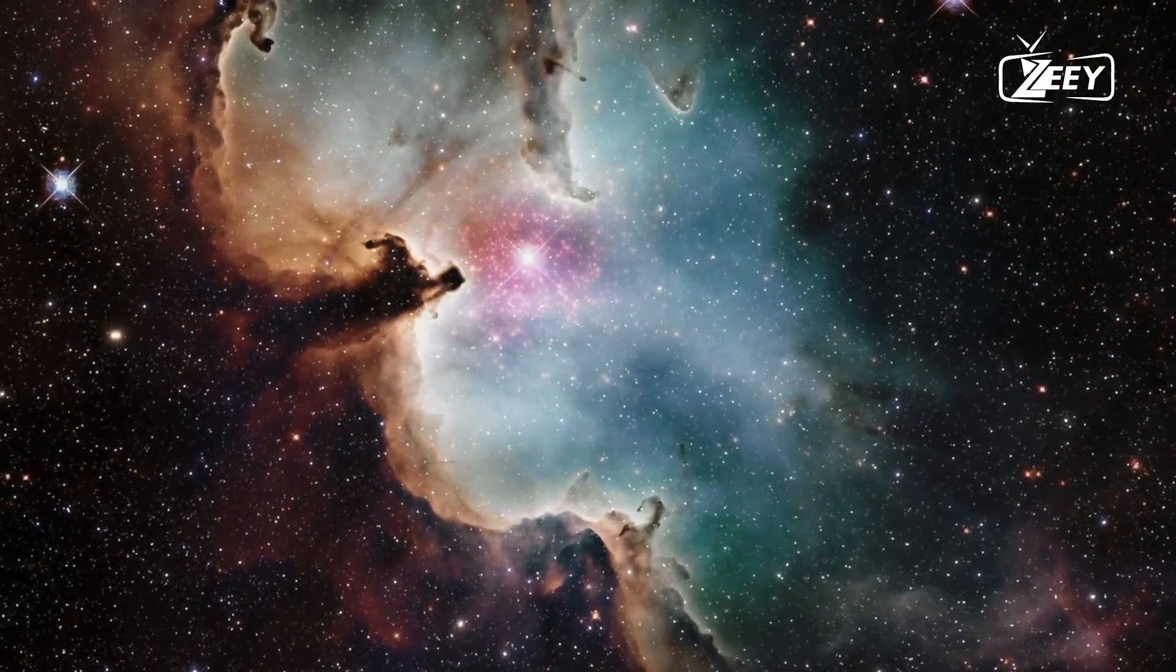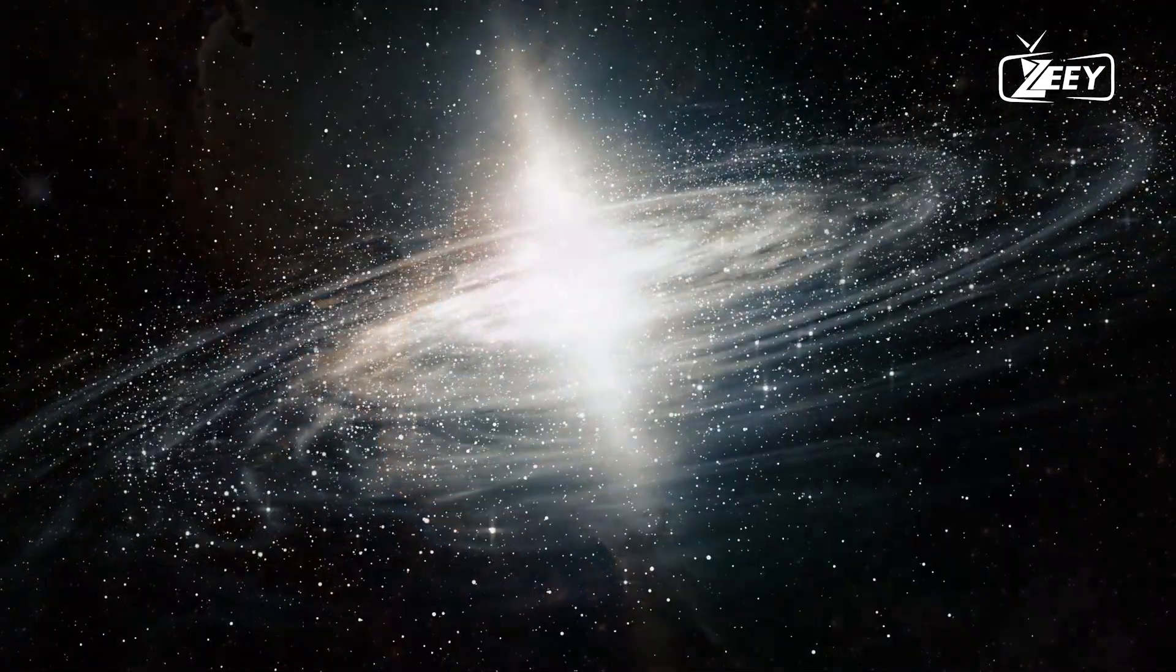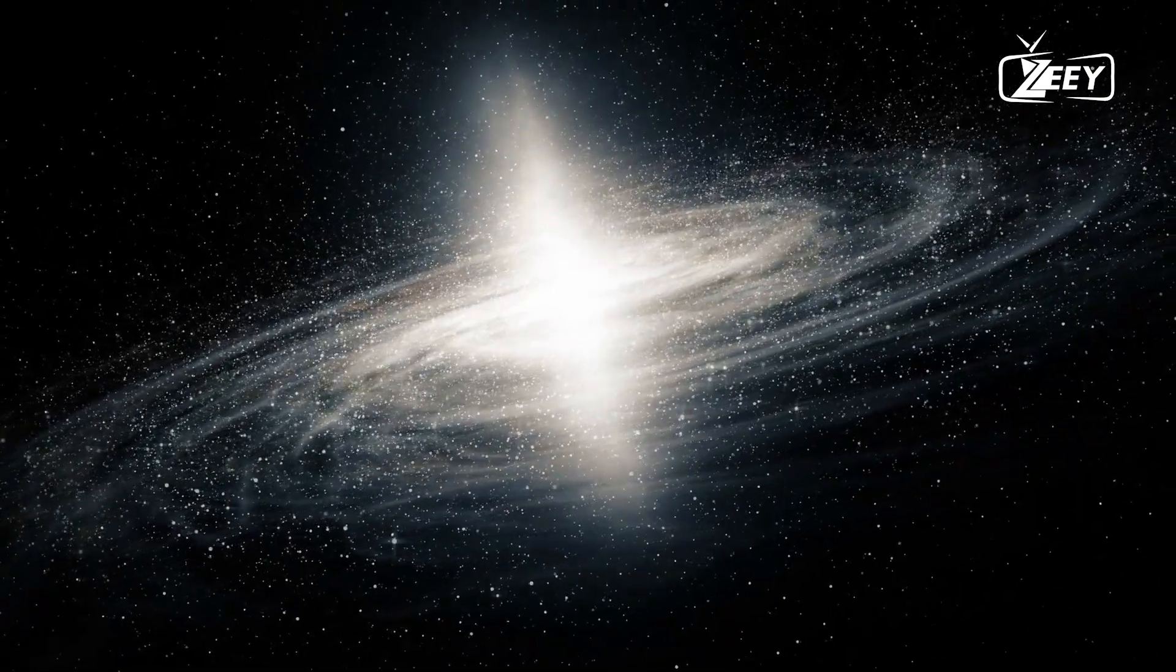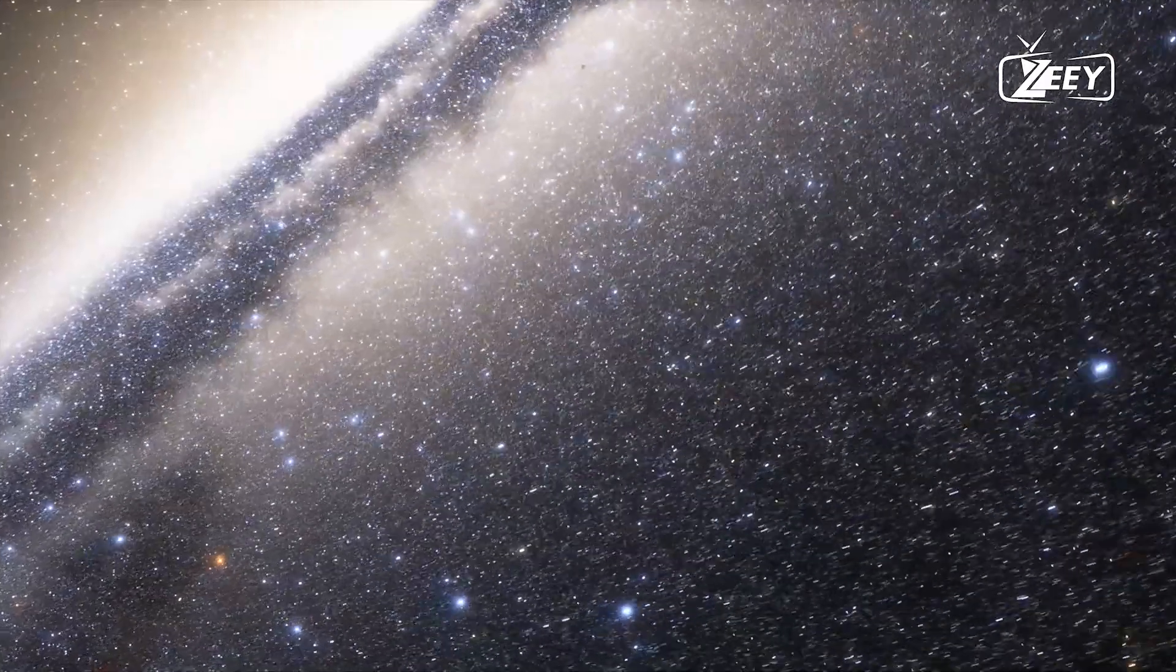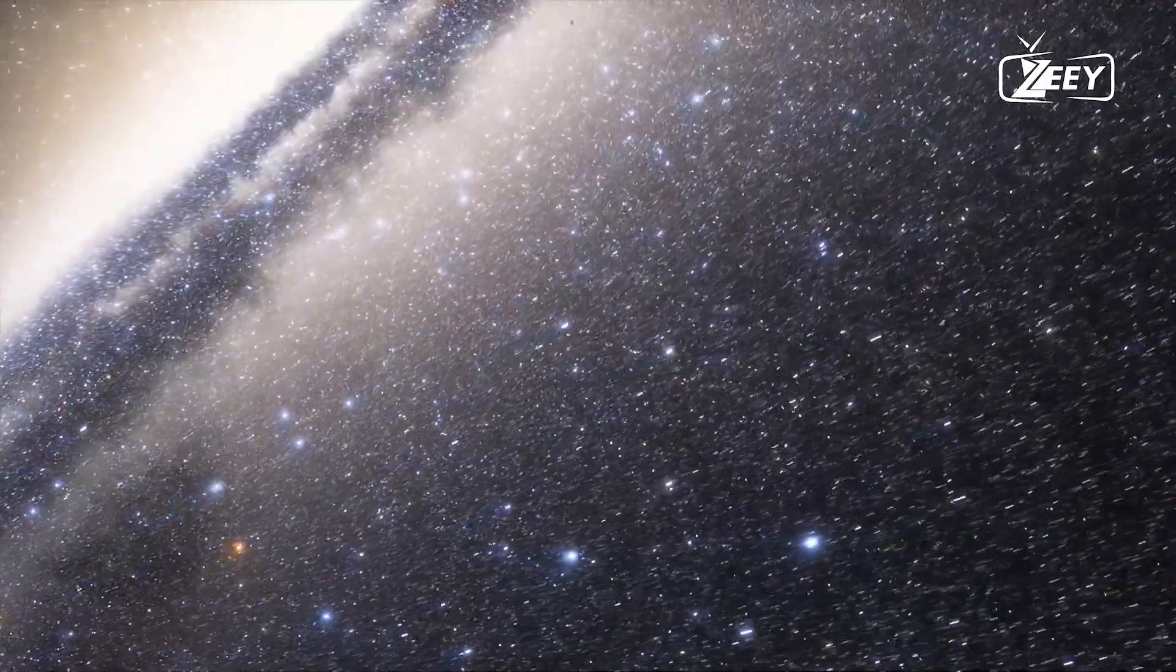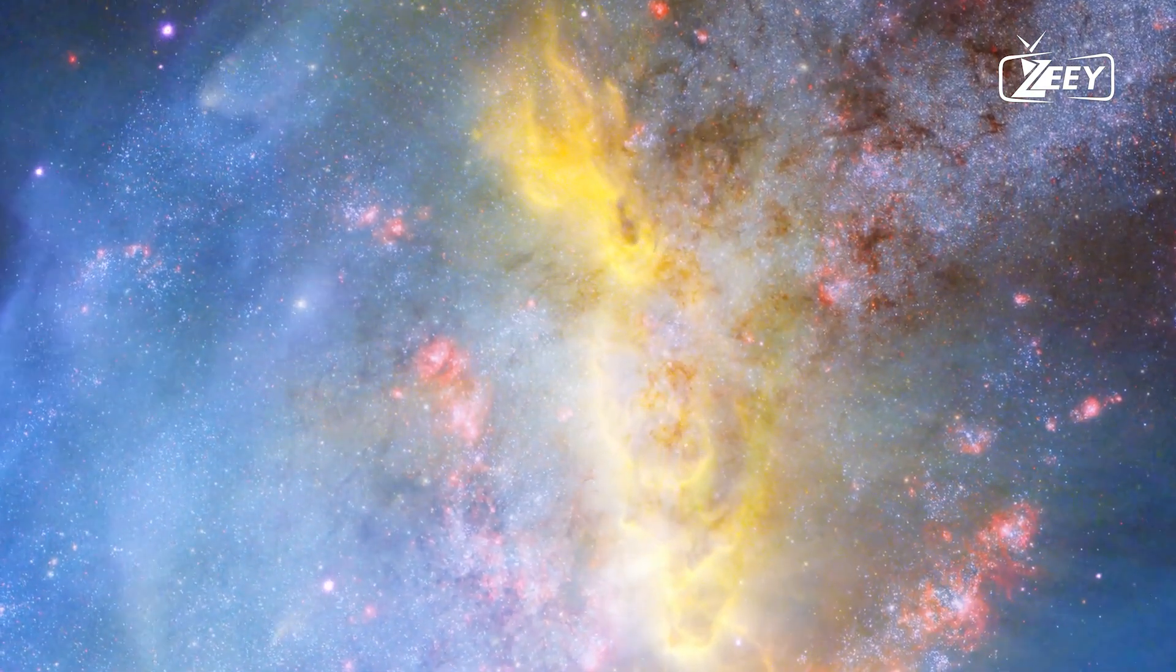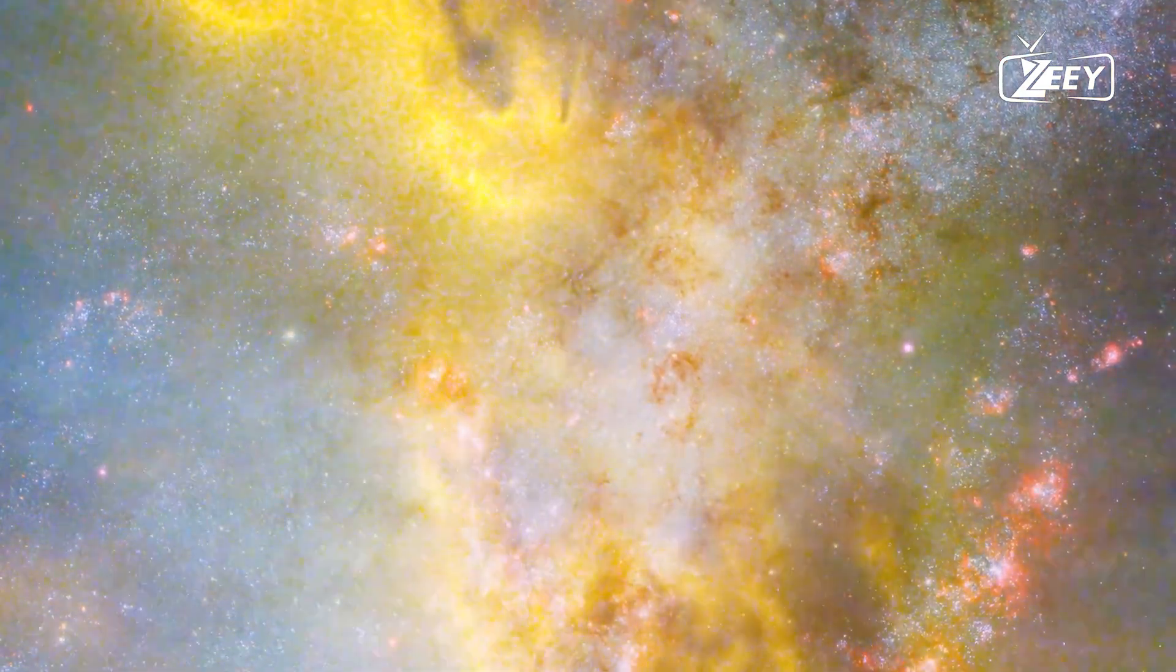His observations suggested that our solar system was close to the center of this structure. However, Herschel's map was not entirely accurate due to his unawareness of interstellar dust, which blocks our view of stars in the Milky Way's central region. Despite its inaccuracies, his map was a major breakthrough, showing the Milky Way as a disk and providing important clues about its structure.